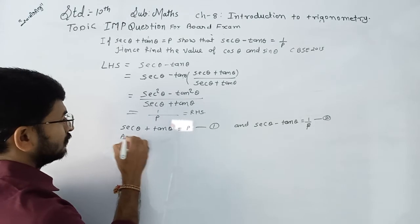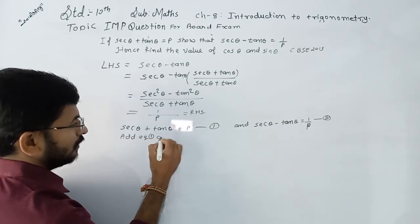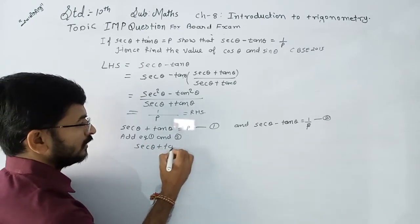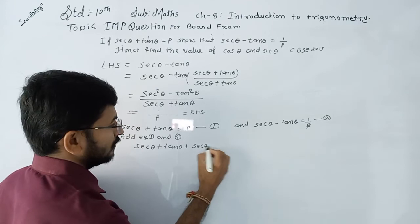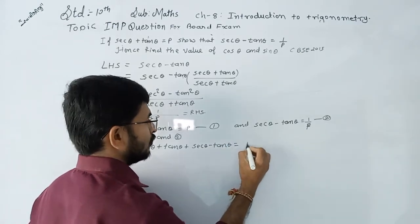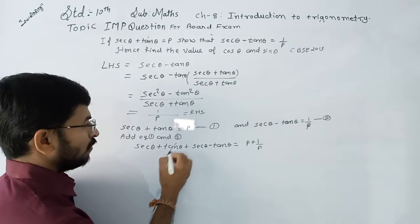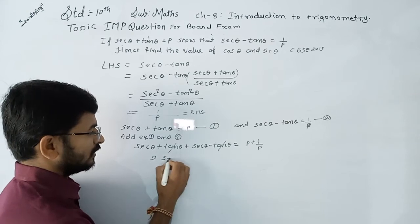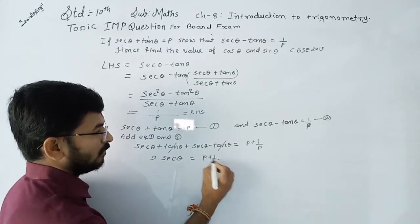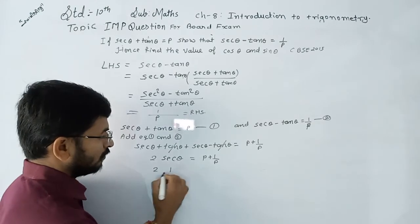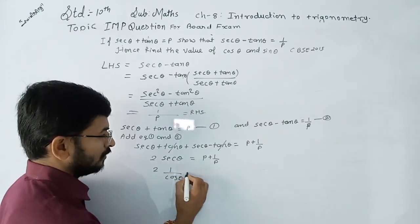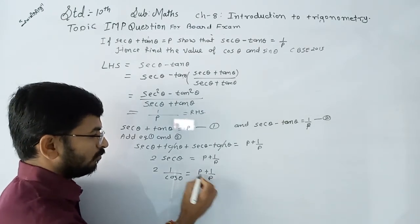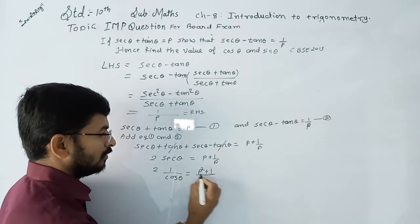Adding equation 1 and equation 2: (sec θ + tan θ) + (sec θ - tan θ) = p + 1 upon p. Now, 2 sec θ = p + 1 upon p. Since sec θ = 1 upon cos θ, we get the expression for sec θ.